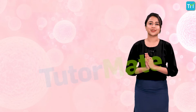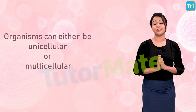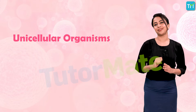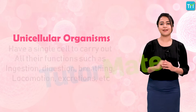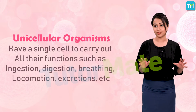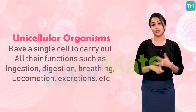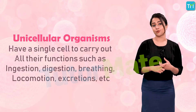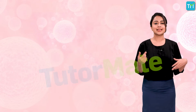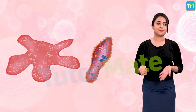Organisms can be unicellular or multicellular. Unicellular organisms have a single cell to carry out all their functions, such as ingestion, digestion, breathing, locomotion, and excretion. Examples would be amoeba and paramecium.